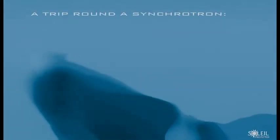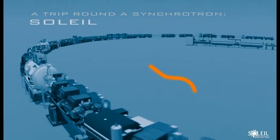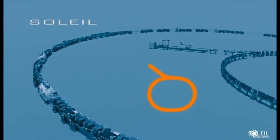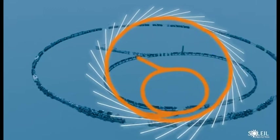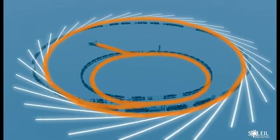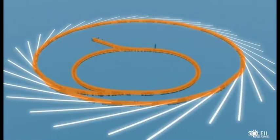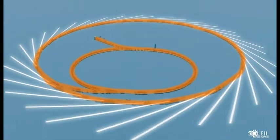In a synchrotron, like Soleil, several dozen specific laboratories, the beamlines, use extremely bright light to probe and study samples of all kinds of materials. But how is this radiation produced? To find out, we invite you on a 3D journey through the Soleil accelerators.